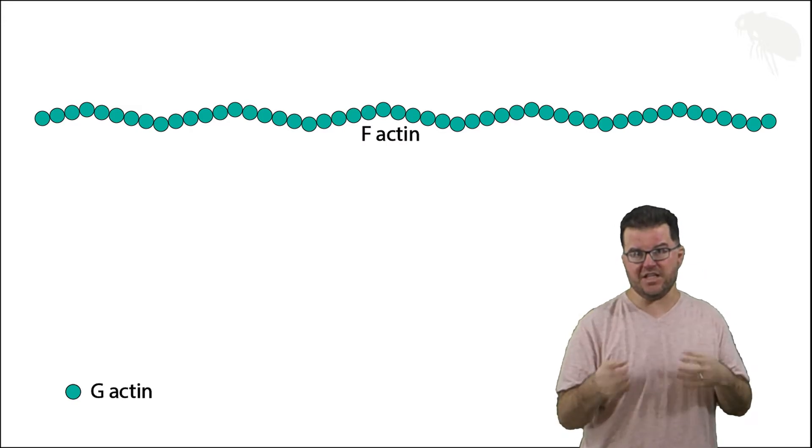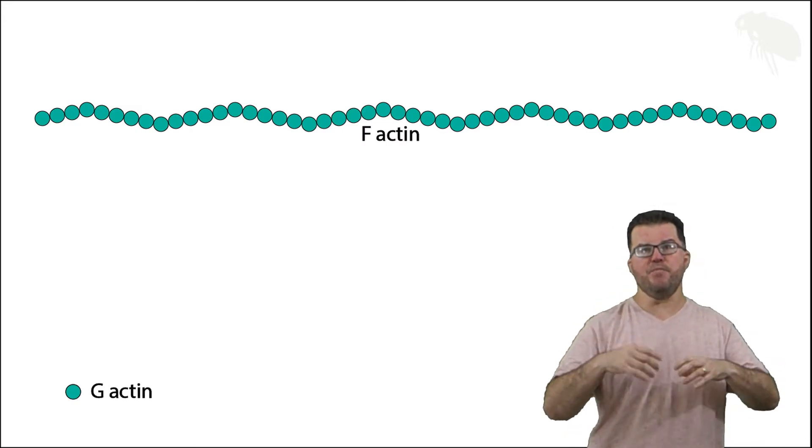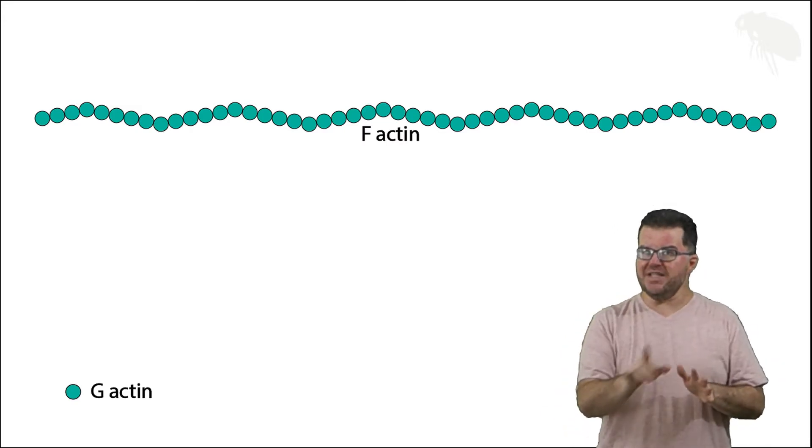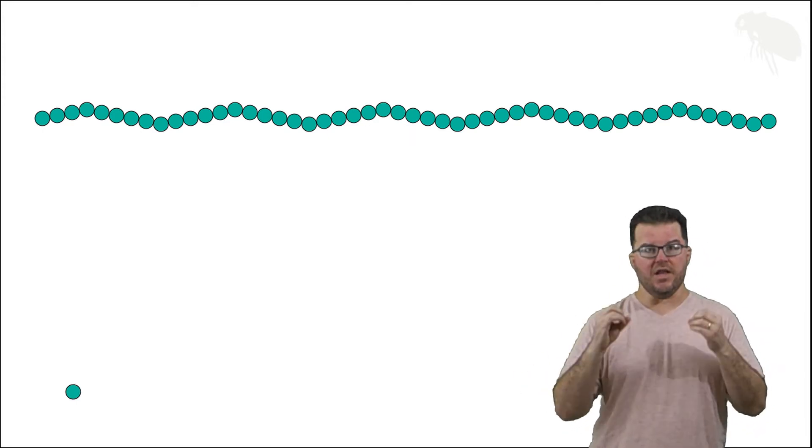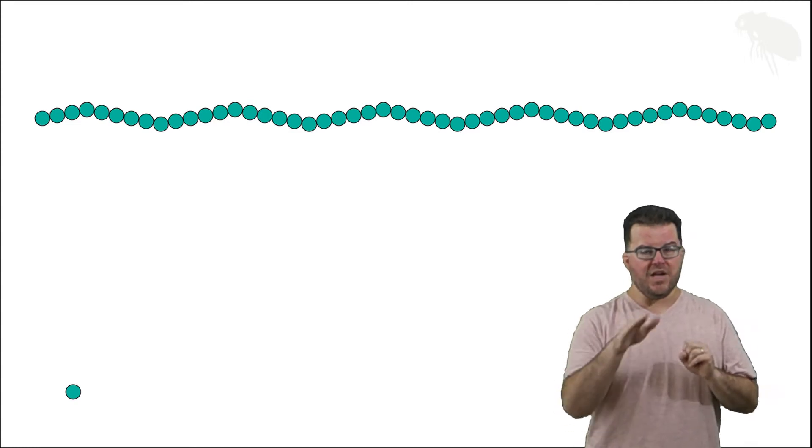That thread is called f-actin, filamentous actin. But we're still not done because a microfilament isn't one strand of f-actin, it's two strands of f-actin that are arranged in a particular format.